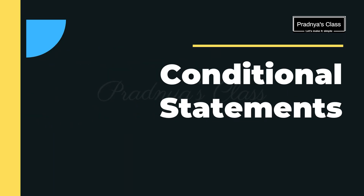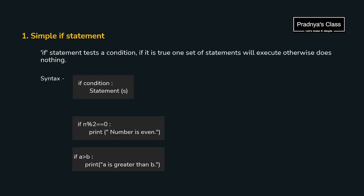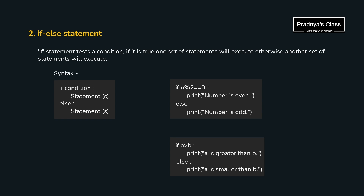We have now reached the conditional statement. It is used to check a condition, and based on the result, some statements will execute and some will not. The first form is simple if: we write the if keyword followed by a condition, and if the condition evaluates to true, those statements get executed. For example, if the number is completely divisible by 2, its remainder is 0, meaning the number is even. If we also want to write the else part, we use if-else — the else block executes when the condition is false, so the number will be odd.